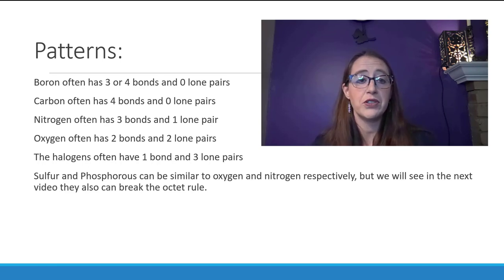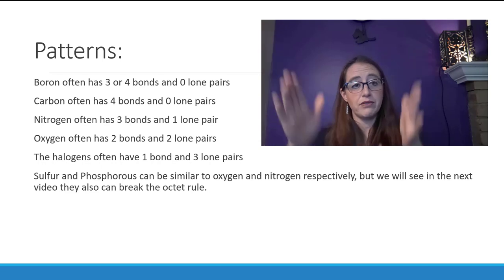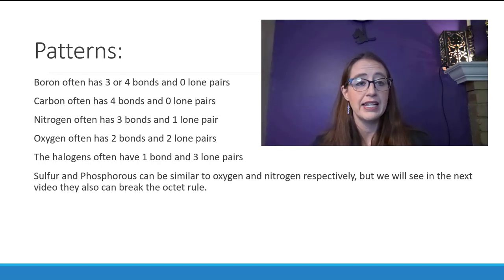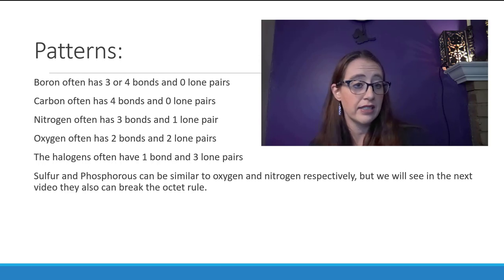And then sulfur and phosphorus can kind of do two different things. They'll either be very similar to oxygen and nitrogen respectively—and if you look at your periodic table, you can see that sulfur is right below oxygen, phosphorus is right below nitrogen, and so that kind of makes sense—but we'll also see in the next video that they can break the octet rule, in which case they can form six bonds or five bonds respectively. And we'll talk about that a little bit more next time.